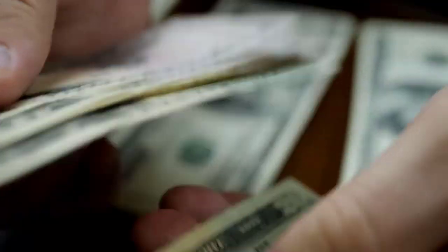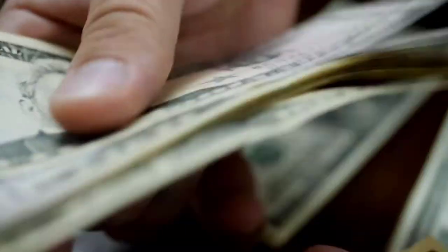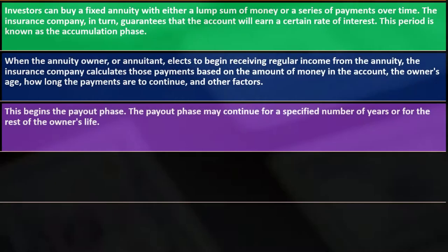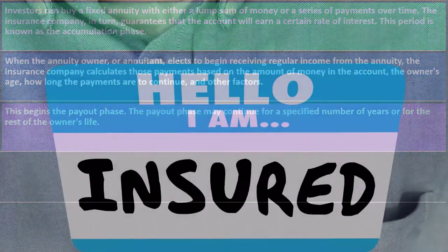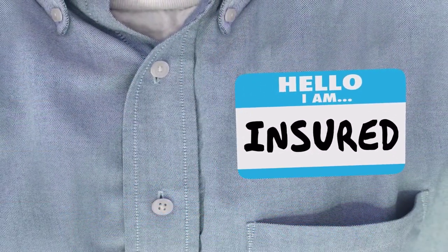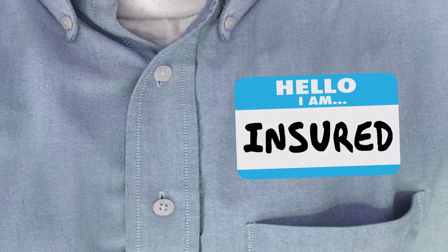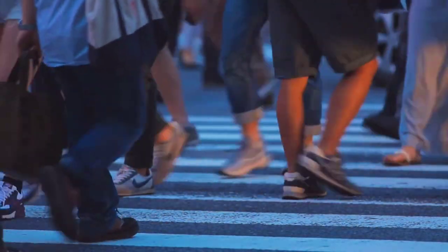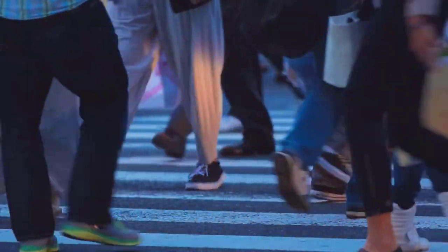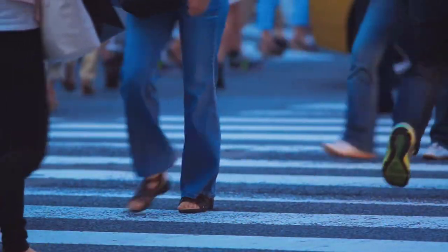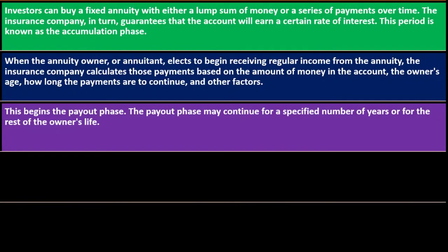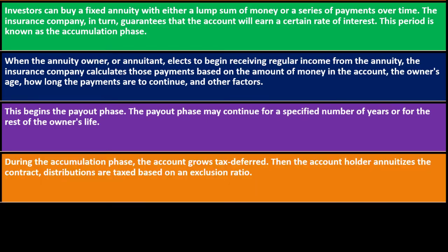You might wonder how the insurance company figures out lifetime payments. They rely on actuarial tables to estimate life expectancy — one reason life insurance companies work well with annuities. They can't determine when you specifically will die, but with a large pool of annuitants they can get a decent estimate of average mortality, allowing them to calculate how much would be paid out until death and how much the payments would be.